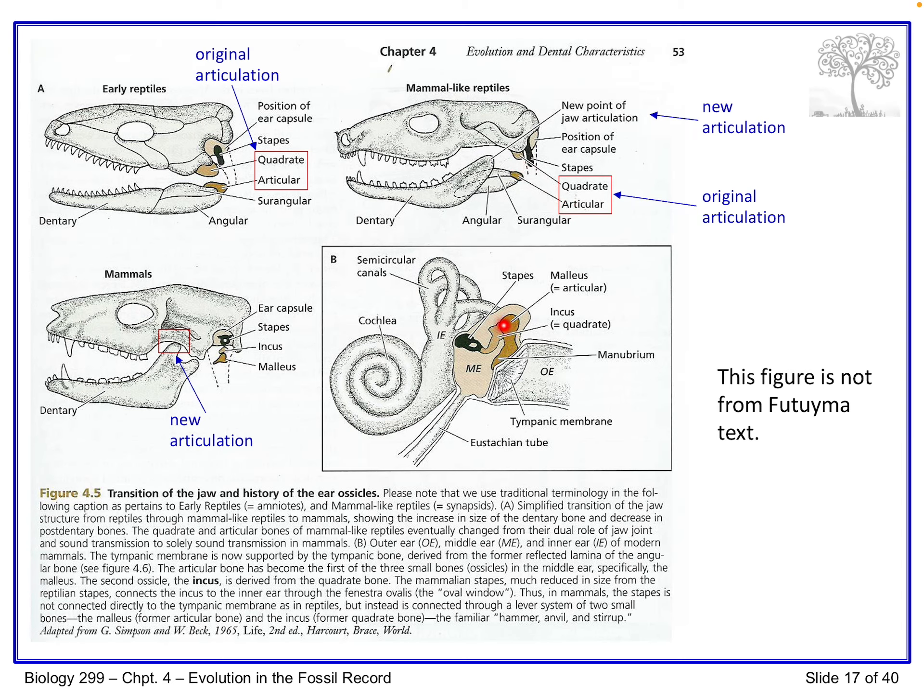A new jaw joint articulation forms - a flange on the dentary coming up articulates inside the squamosal to become the modern mammal jaw joint. Once that new jaw joint had evolved, the malleus and the incus - the quadrate and the articular - were no longer needed as a jaw joint. They could become the malleus and the incus inside the middle ear and take on their role in hearing. Because they had a role early on in a rudimentary type of hearing, they were pre-adapted to specialize and become the modern mammal middle ear bones.